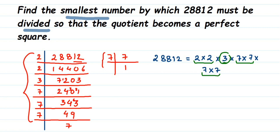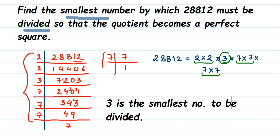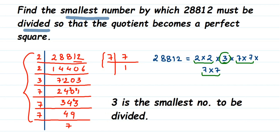So the smallest number to be divided is 3. Therefore, 3 is the smallest number by which 28812 must be divided to make it a perfect square. It's simple — we just find which number is not in a pair, and that's the number to be divided. If you have any questions or doubts, drop a comment. Thank you for watching!